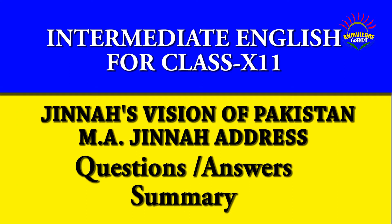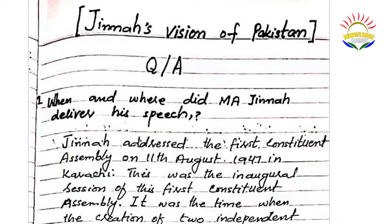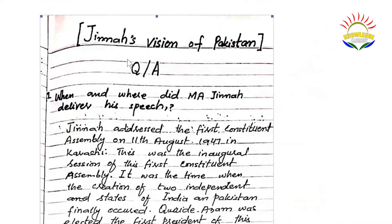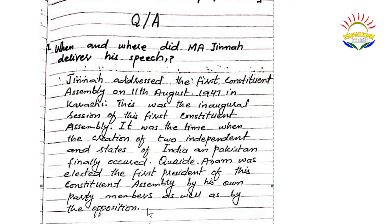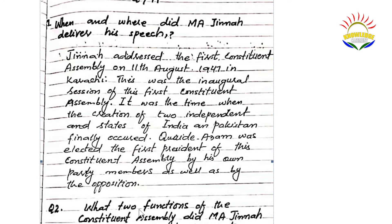After reading the chapter 'Jinnah's Vision of Pakistan,' let's look at the question answers. The first question is: when and where did M.A. Jinnah deliver his speech? Jinnah addressed the first constituent assembly on 11 August 1947 in Karachi. This was the inaugural session of the first constituent assembly — it was the time when the creation of two independent states of India and Pakistan finally occurred. Quaid-e-Azam was elected the first president of this constituent assembly by his own party members as well as by the opposition.